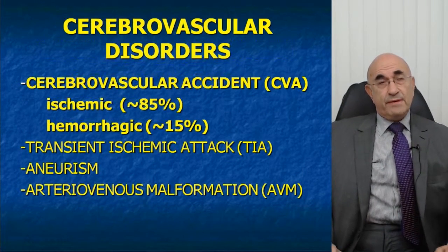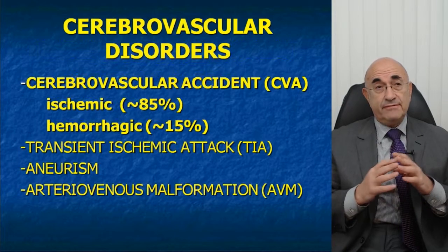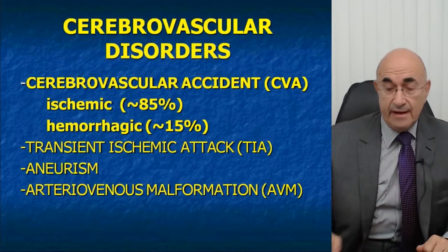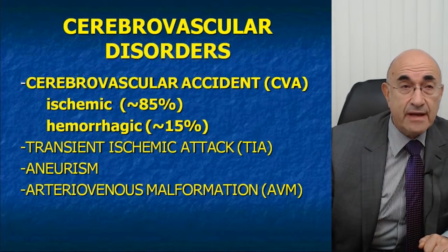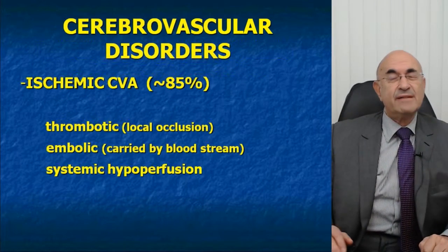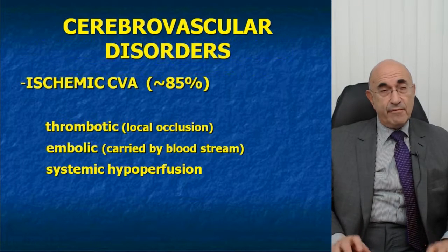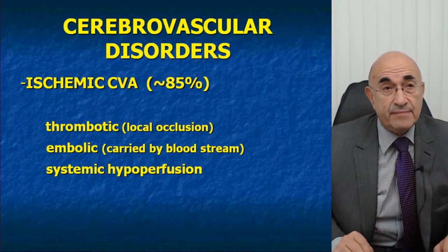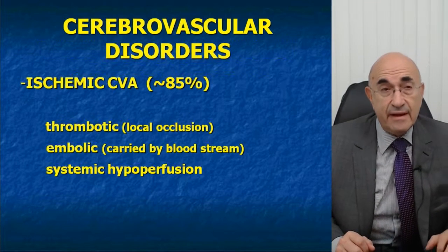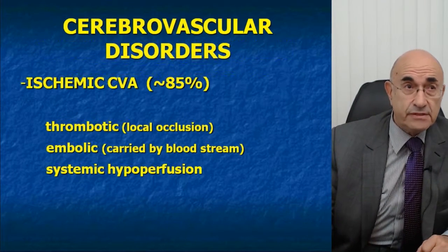The same is true for aneurysms and arteriovenous malformations. When people talk about cerebrovascular disorders, they are particularly interested in cerebrovascular accidents. There are two kinds: ischemic and hemorrhagic. Ischemic CVAs are more common, accounting for about 85% of all CVAs, while hemorrhagic account for about 15%. Ischemic CVAs are divided into thrombotic or embolic CVAs, depending on whether it's a local occlusion or an embolus carried by the bloodstream. There is also systemic hypoperfusion, which is also a form of ischemic event affecting the whole brain or large portions of it.